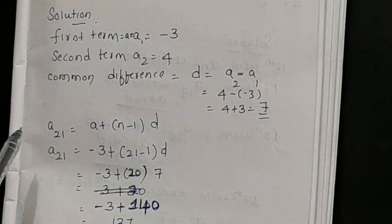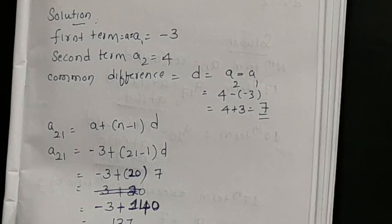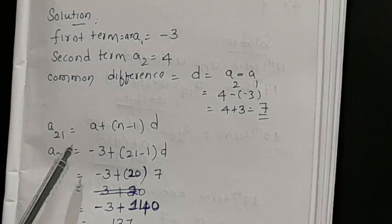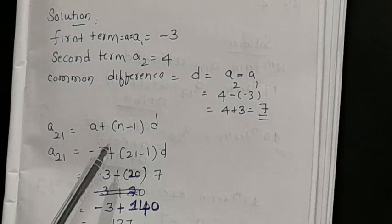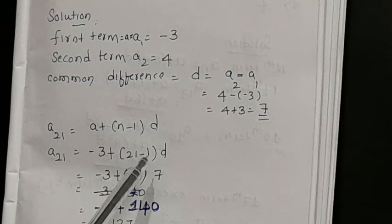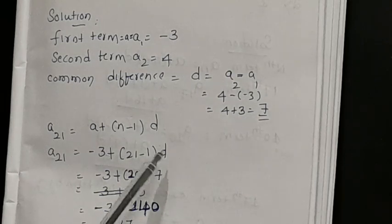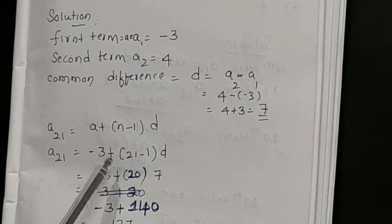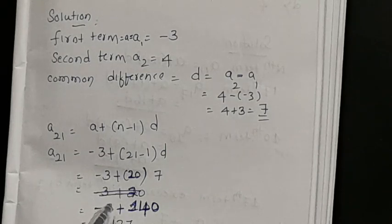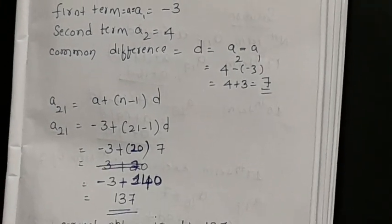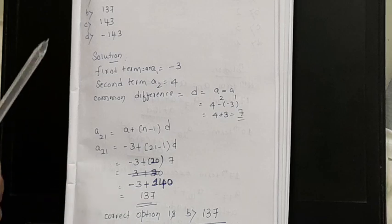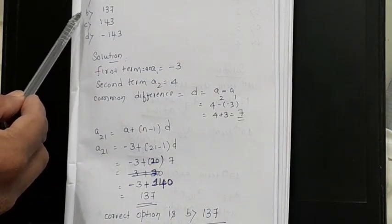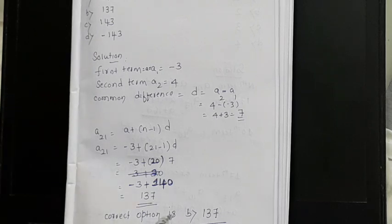To find the 21st term: a21 = a + (21-1)d = -3 + 20×7 = -3 + 140 = 137. So the 21st term is 137. The correct option is B.